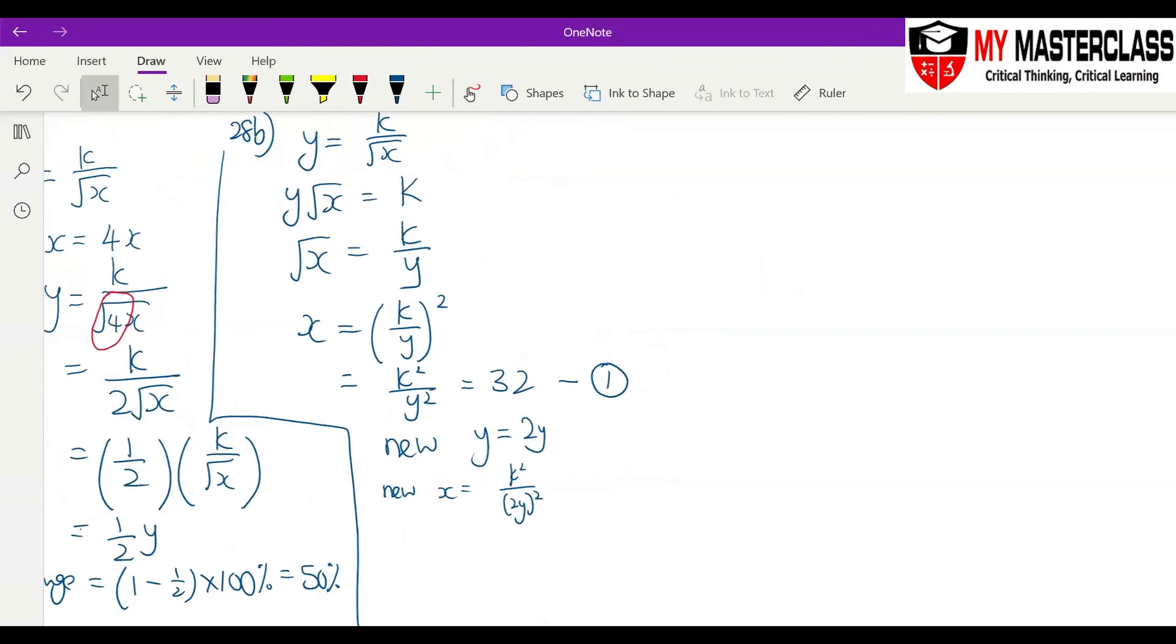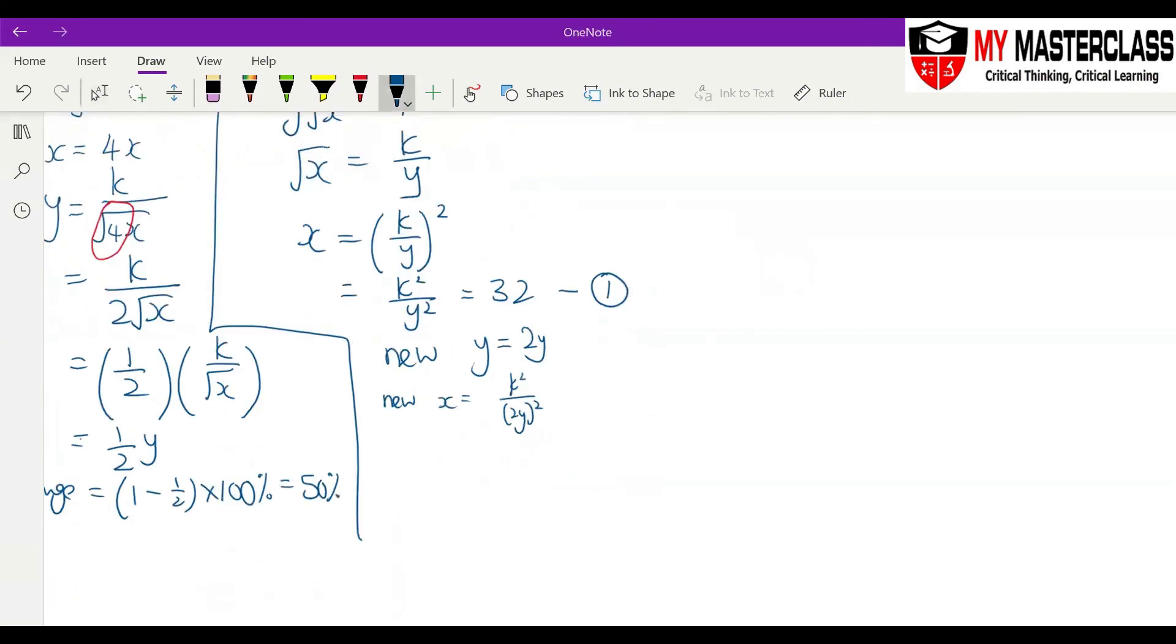This one, we change the role of x and y, that means you must make x the subject first. Remember you learn subject formula. So this, you open up, becomes k square over 4y square. What is k square over y square? Equals to 32. That's why the answer is equal to...